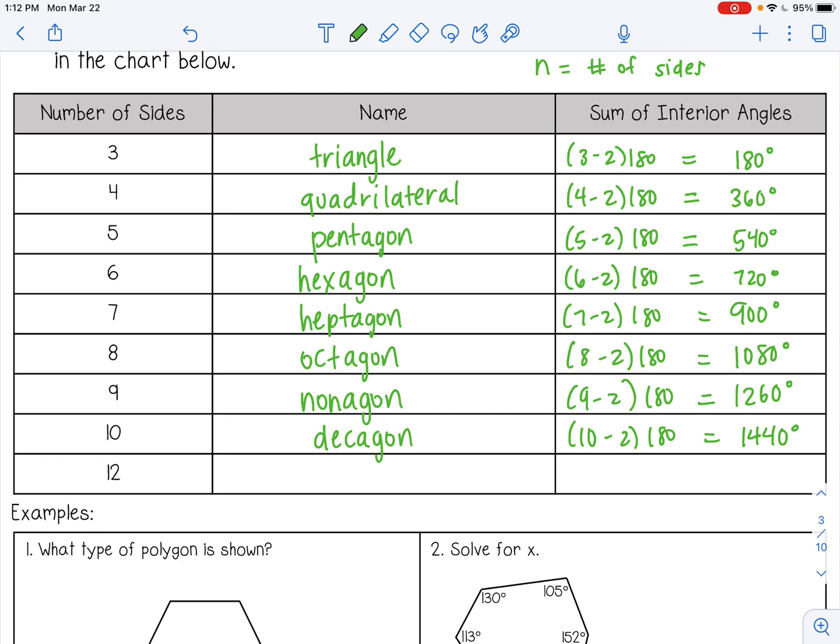There really isn't a name for an 11-sided polygon, so we're going to skip to 12. A 12-sided polygon is a dodecagon. And that gives us 1,800. And the pattern that you should have been seeing is every time we add a side, we add 180 degrees to the interior angles. And that will continue to work. Now here, since we went from 10 to 12, we actually added not 180, but 360.